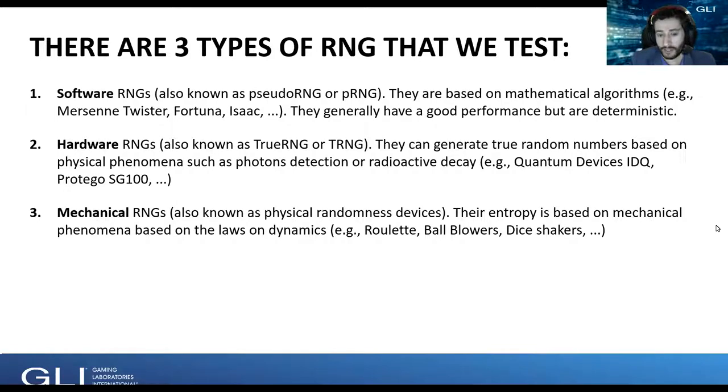And finally, we also test mechanical RNGs. We call them also physical randomness devices that base their entropy on the laws of dynamics. So, for instance, we can test roulette machines, ball blowers, dice shakers, and others. And finally, of course, one can have combinations of these categories of RNGs. It's not unlikely to see a combination of software and a hardware RNG where the entropy comes from the hardware device and then it is processed by the software algorithm.